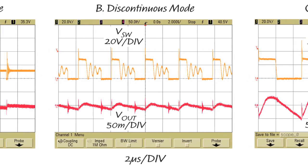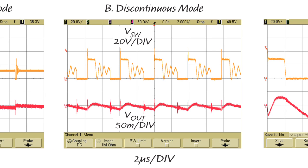At point B, with 0.5A load current, the LT8302 works in discontinuous mode.